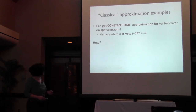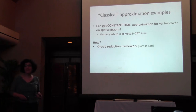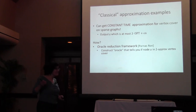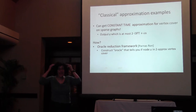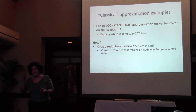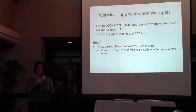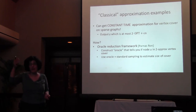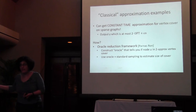We're going to use this to get a constant-time approximation for vertex cover on sparse graphs where degree is bounded by a constant. We'll use the oracle reduction framework of Parnas and Ron. We construct an oracle that tells you if node U is in the 2-approximate vertex cover — the oracle has a specific vertex cover in its head and must be consistent across queries. Once I have that kind of oracle, I can use standard sampling to estimate how many nodes are in the vertex cover.